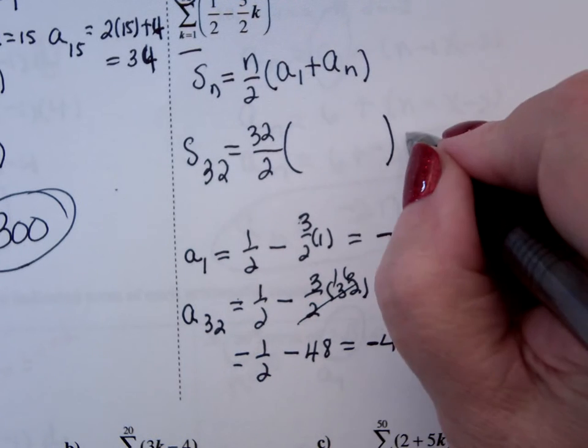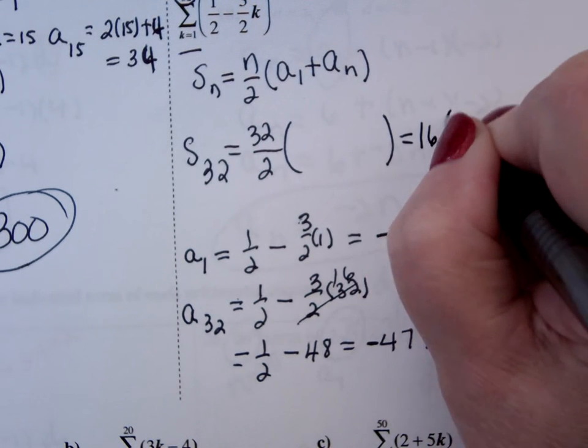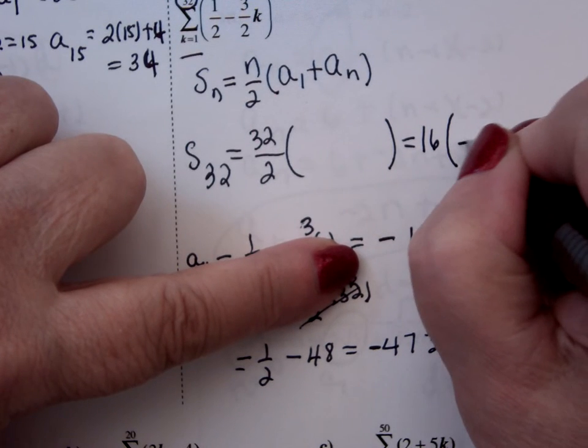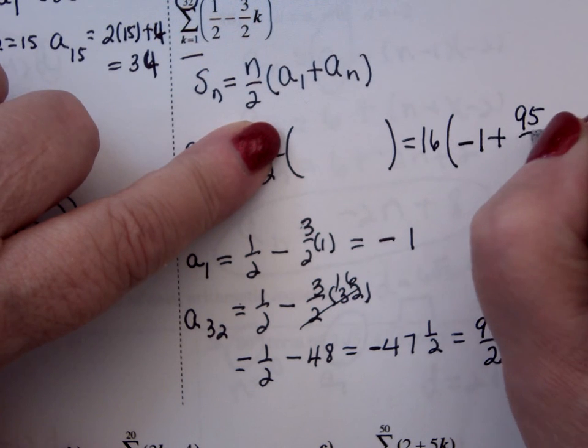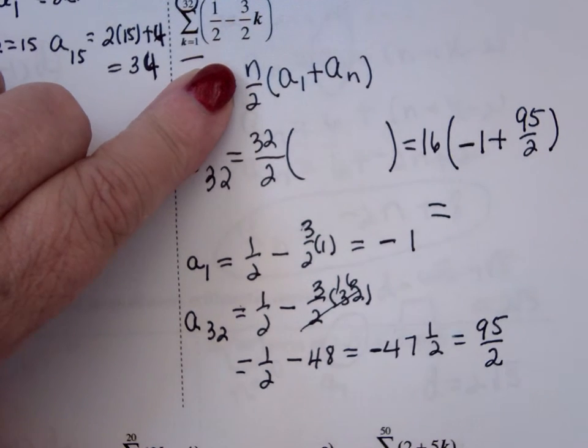So this is going to be 16 times a1 is negative 1 plus 95 halves. I see I need more space.